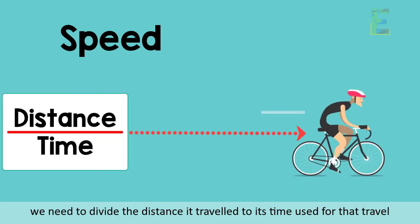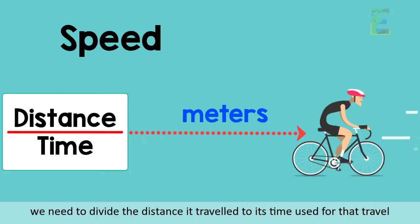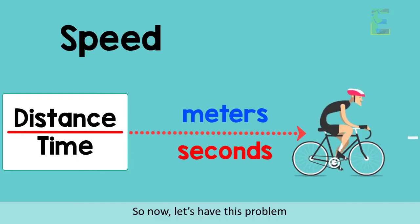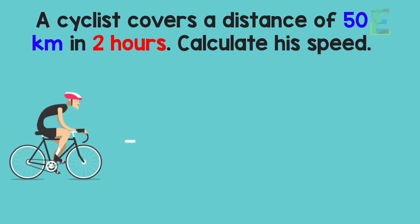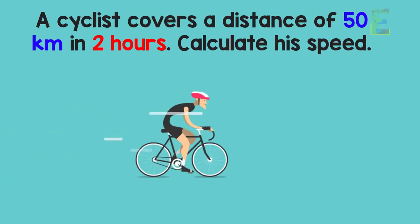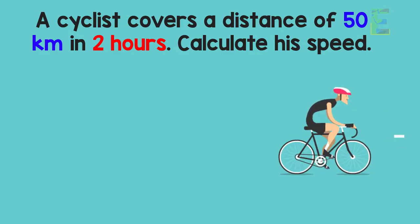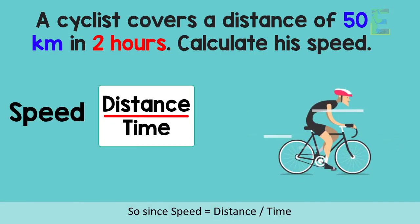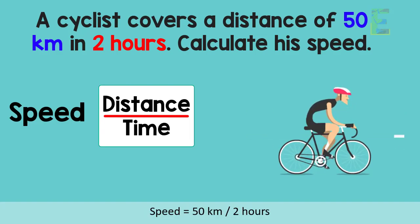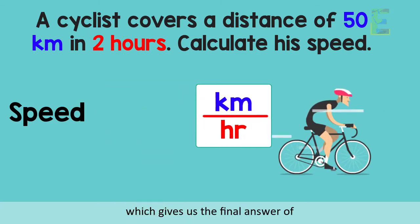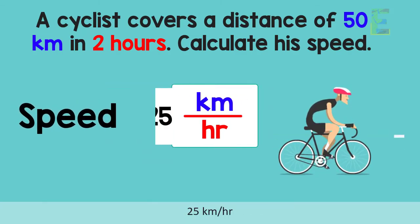divide the distance it traveled by the time used for the travel. So now let's have this problem: a cyclist covers a distance of 50 kilometers in two hours — calculate his speed. Since speed is equal to distance over time, speed is equal to 50 kilometers divided by 2 hours, which gives us a final answer of 25 kilometers per hour.